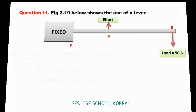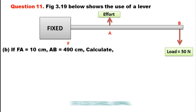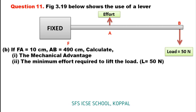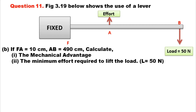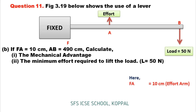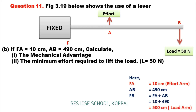Now, Part C: FA is equal to 10 cm and AB is equal to 490 cm. We know FA is the effort arm, which is 10 cm. FB equals FA plus AB, which is 10 plus 490, equal to 500 cm — that is the load arm.